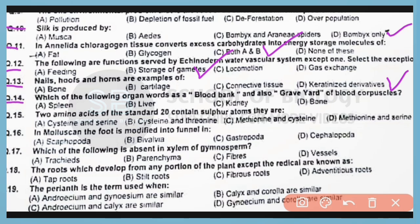Question number 14. Which of the following organs works as a blood bank and also graveyard of blood corpuscles? Correct answer is option A. Spleen is known as blood bank of the body and also renowned as graveyard of blood corpuscles.